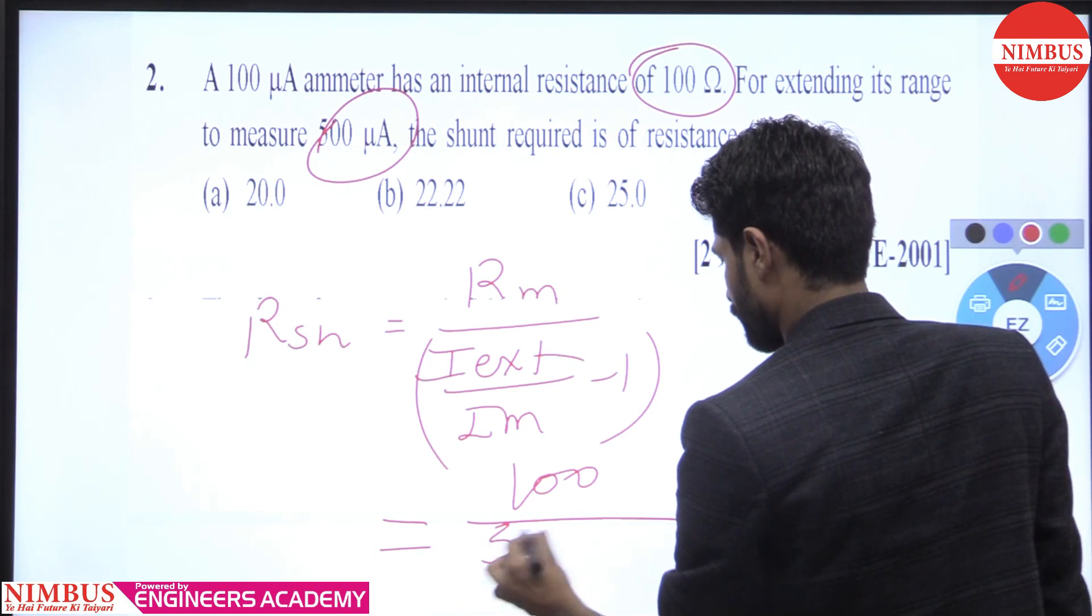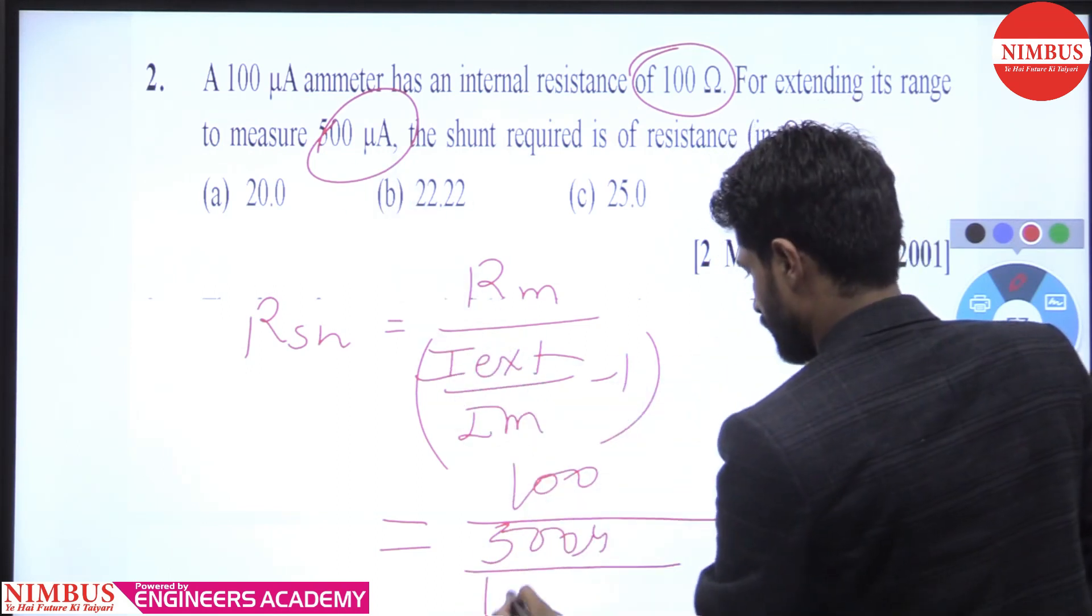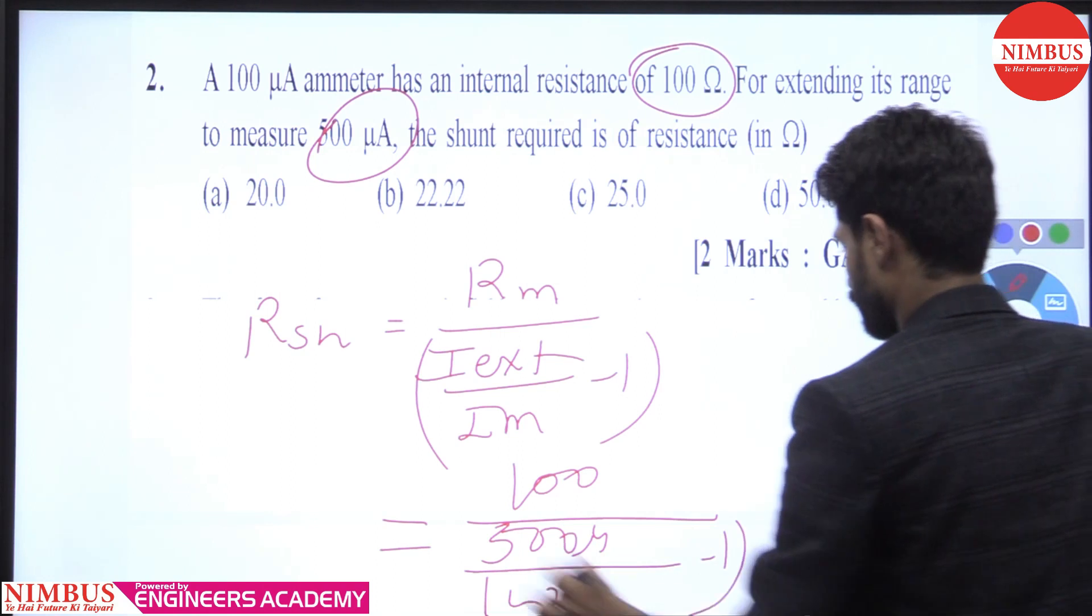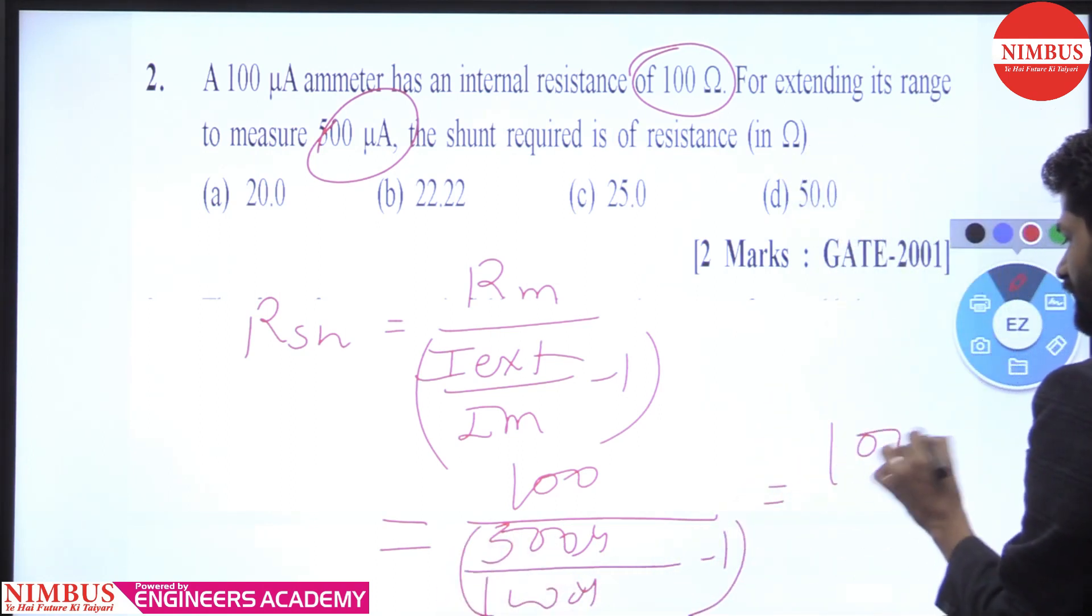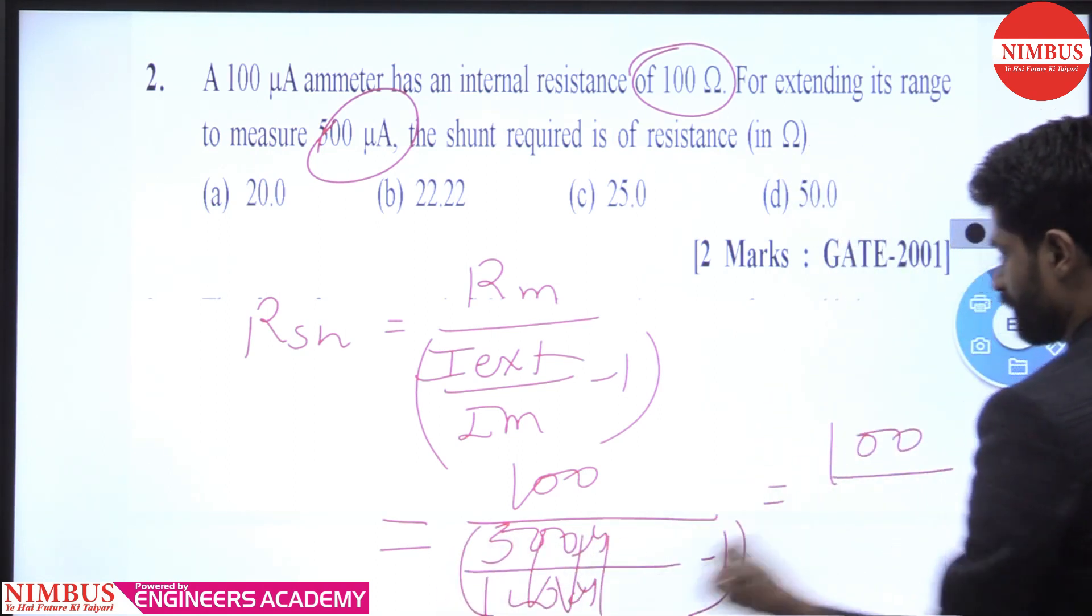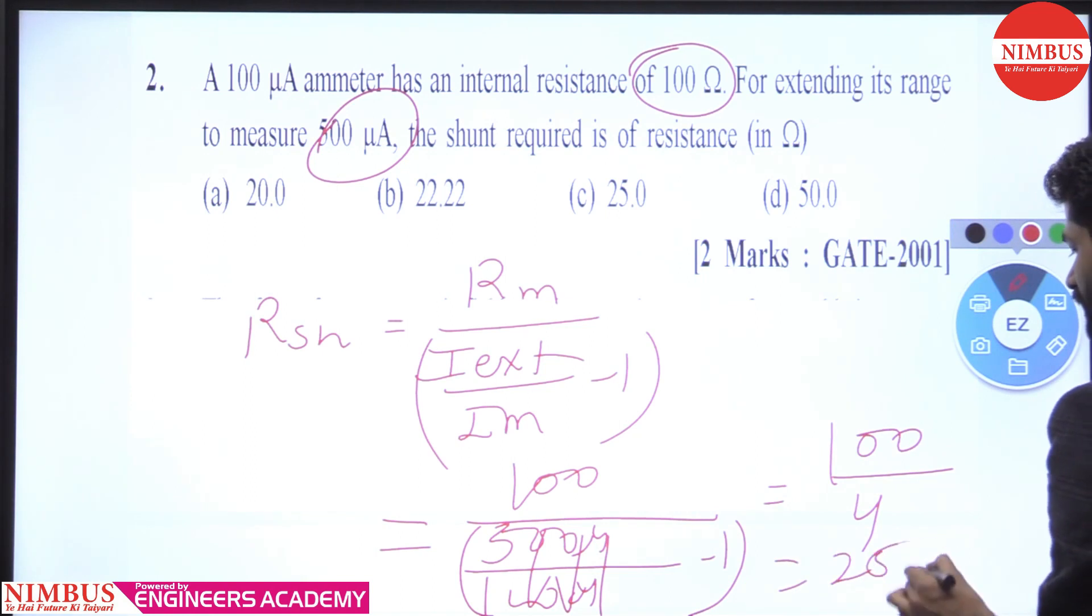500 micro. What is the old range? 100 micro. Divided by 4, this equals 25 ohm.